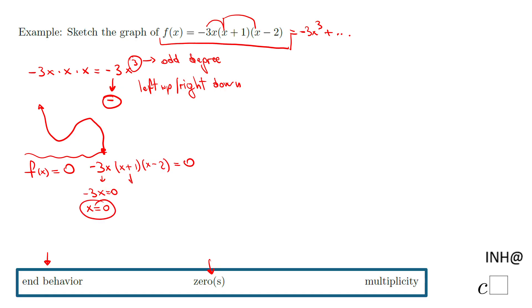Then we have this guy: x plus 1 equals zero, which gives us x equals negative 1. And x minus 2 equals 0, which gives us x equals 2.